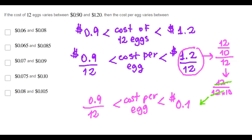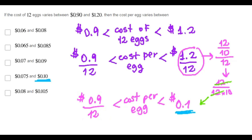As you can see, choice D is the only one that has $0.10, therefore I don't need to calculate the other fraction — it's clear that choice D is correct.